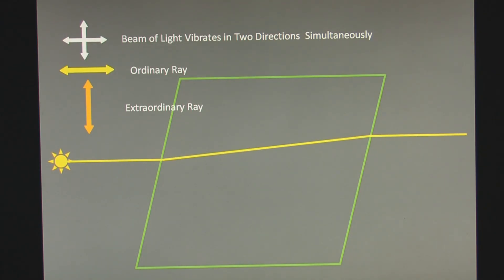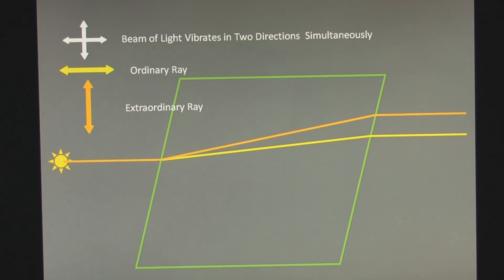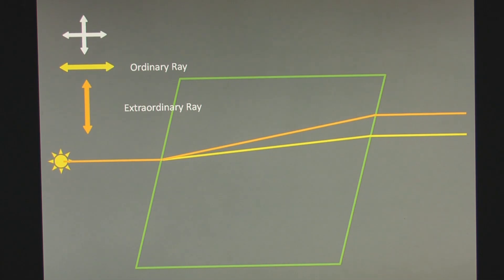Here comes a beam of light passing through the calcite crystal structure. This is the path of the ordinary ray. Notice that as it enters into the calcite, it is bent, or refracts. The extraordinary ray passing through the calcite is also refracted, but it is refracted more. So there are two beams of light: one that is vibrating in a vertical direction, and the other beam of light is vibrating in a horizontal direction.